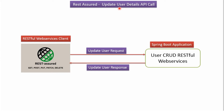In this video tutorial I will explain how to write an Update User Details client API call using REST Assured. Here you can see a RESTful Web Services client which is developed using REST Assured. Using this we can send an Update User Request to a Spring Boot Application. The Spring Boot Application processes the request and sends the response back to the client.